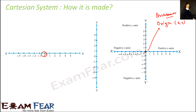We assume that this point is zero on the number line, so we merge these two number lines such that those zero points are overlapping and they are perpendicular. This point is (0, 0). If you move from this point towards the right, you will see one, two, three, four, five, six — positive numbers. Move towards the left and you will see negative numbers: minus one, minus two, minus three, minus four, minus five.